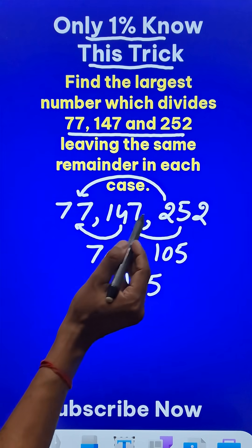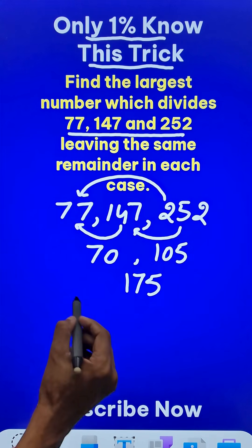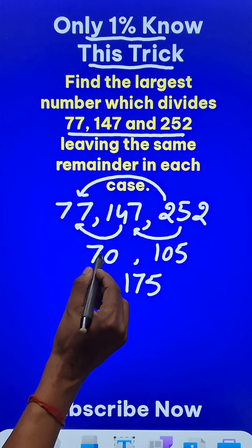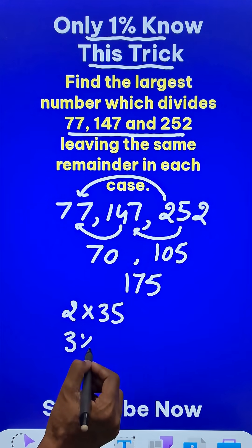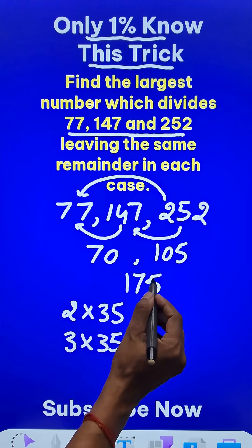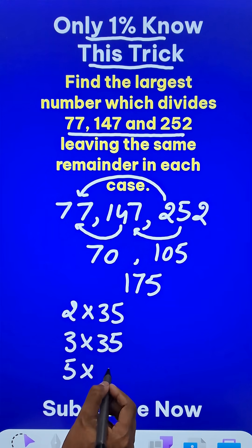We have taken the difference of the numbers in pairs and now if you see, 70 is 2 times 35. The number 105 is 3 times 35 and finally the number 175 is 5 times 35.